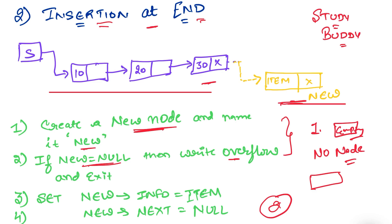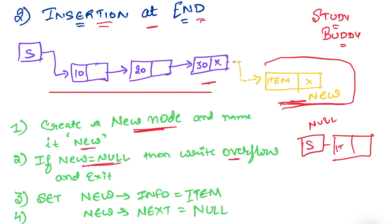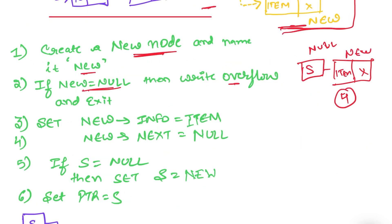We have to write our algorithm accordingly. First we will deal with the case where the linked list is already empty — not even a single node is present. In such a case, all I have is 's', that is my start pointer, which is null, having no value because there is not even a single node in my linked list. Now I need to fix this new node — let's say it contains 'item' — and because there is no successor node, it will have a null value. Let's say its address is 4.